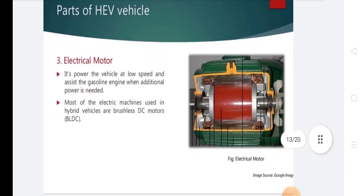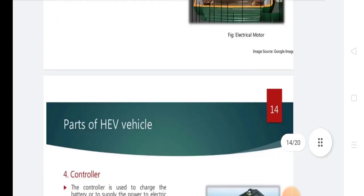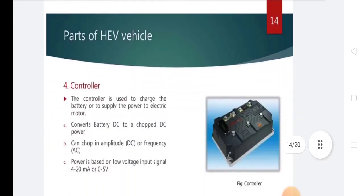Electric motor: It helps power the vehicle at low speed and assists the gasoline engine when additional power is needed. Most of the electric machines used in hybrid vehicles are brushless DC motors, such as BLDC motors.